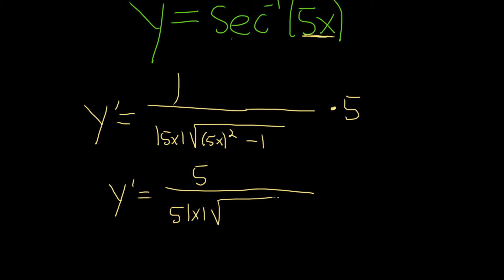And we have our square root, 5x squared is 25x squared, and then minus 1. Now we can cancel the 5s, and so we end up with 1 over the absolute value of x times the square root of 25x squared minus 1. And that should be the final answer.